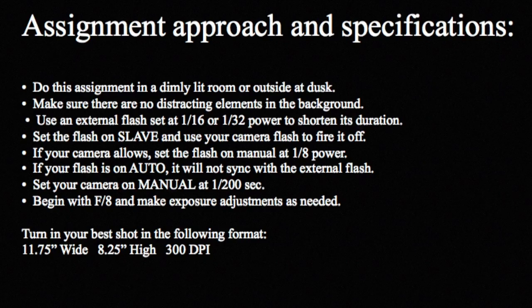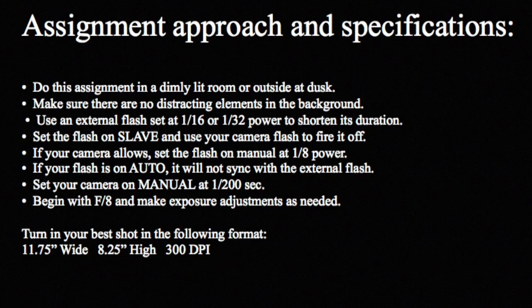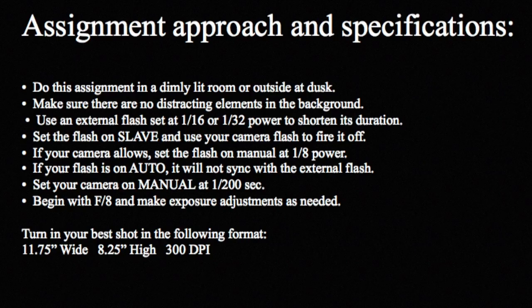Here's the assignment approach and specifications. You have to do this assignment in a dimly lit room or outside at dusk. Make sure that there are no distracting elements in the background. Use an external flash set at one-sixteenth or one-thirty-second power to shorten the duration of the flash. Set the flash on slave and use your main camera flash to fire it off. If your main camera flash allows, set the flash on manual at eighth power — if your flash is on auto, it will not synchronize with the external flash. Set your camera on manual at one two-hundredth of a second, then begin at f8 and make exposure adjustments as needed. Turn in your best shot in the following format: 11.75 inches wide and 8.25 inches high at 300 dots per inch.